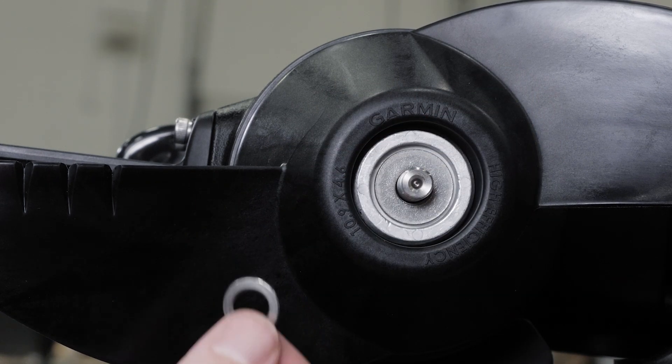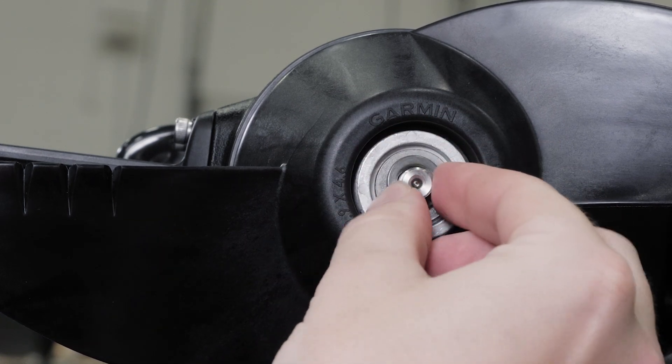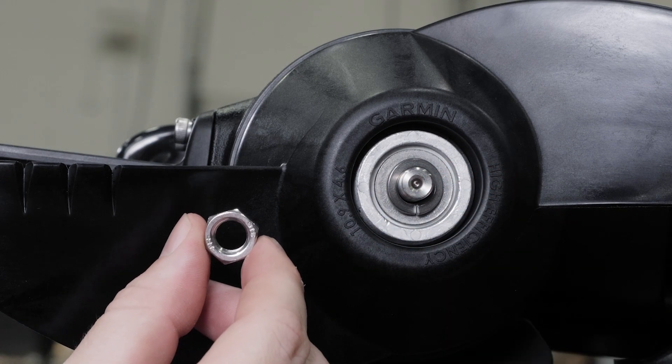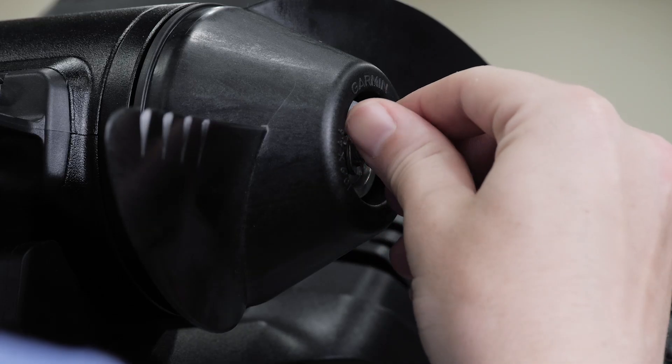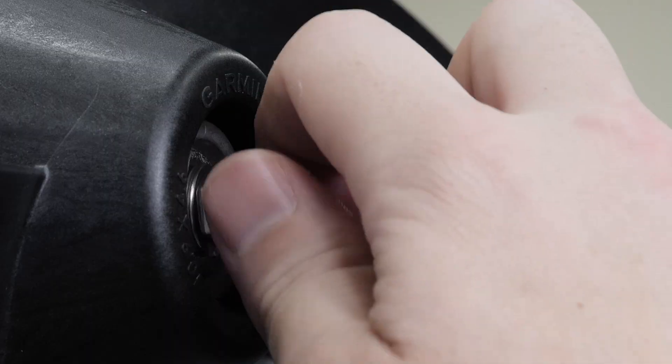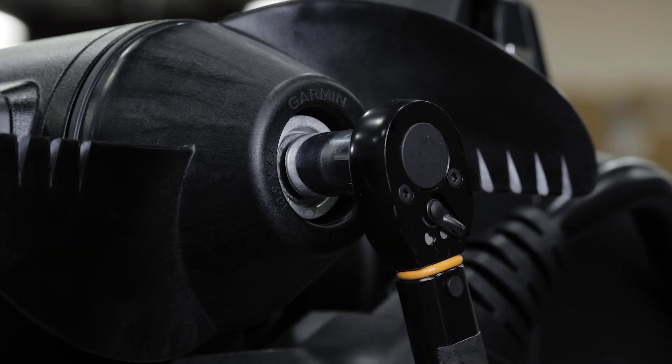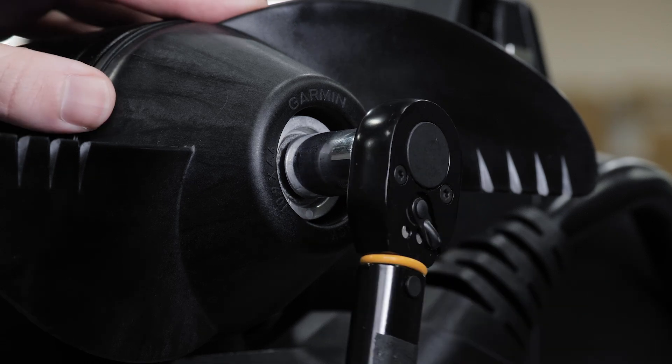Place the nut onto the end of the motor shaft. Tighten the lock nut to 6 foot-pounds to secure the propeller using a 14 millimeter socket.